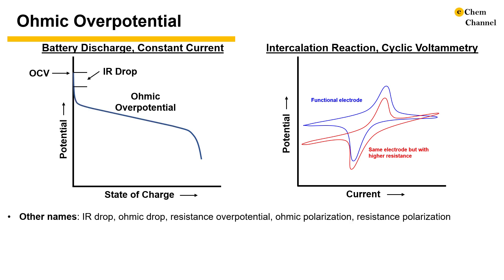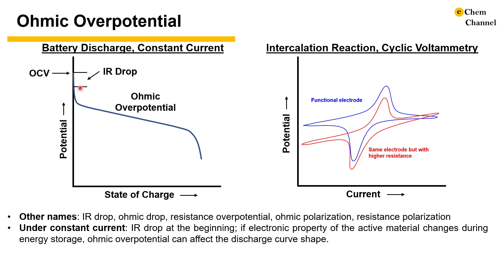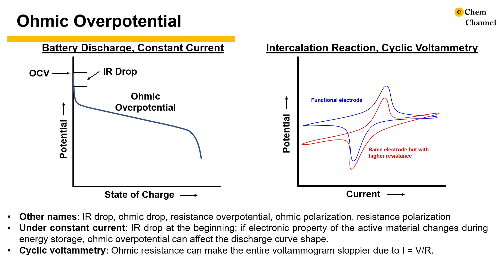Ohmic overpotential reveals itself differently in different testing conditions. Under constant current conditions, IR drop happens within the first few milliseconds after we draw current. If the internal resistance is constant, then IR drop is a constant value. However, often battery active materials change their resistance at different states of charge, and therefore ohmic overpotential can affect the cell potential during charge storage. In cyclic voltammetry, internal resistance affects the current response throughout the experiment because the applied potential is changing constantly. As Ohm's law dictates, at higher applied potential we will see a greater current contribution due to ohmic overpotential, and with greater internal resistance there will be a greater current contribution from ohmic overpotential.